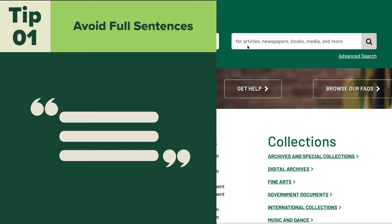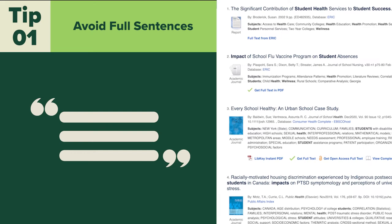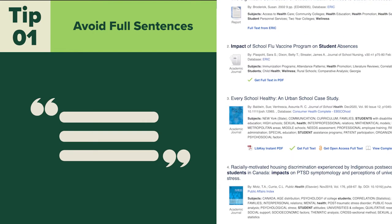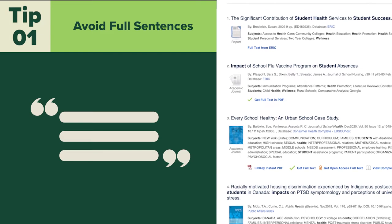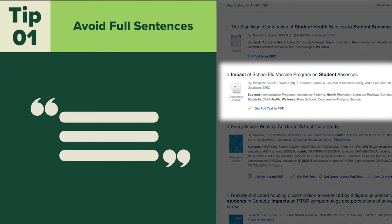Typing your entire question into a database, such as 'what is the impact of overall health and wellness on a student's success,' will end in unnecessary outcomes. The database or search engine will search for every word in the sentence, which will overwhelm your results. Common words that are only relevant in the context of the entire sentence will be picked up by the search engine, like the word 'impact.'